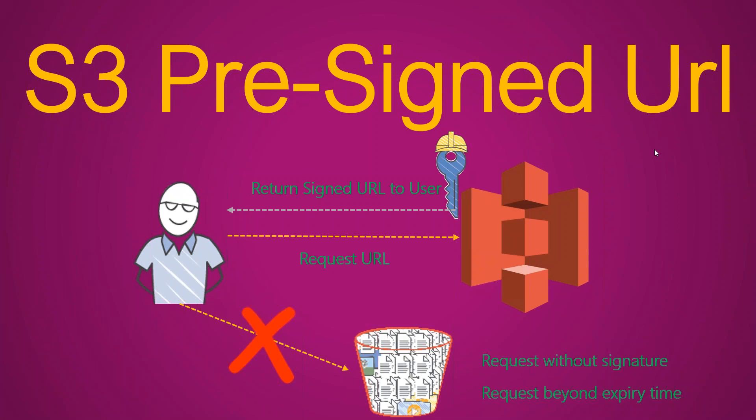When you request for a pre-signed URL, it takes your credentials and signs the URL with a secure token, and it also adds an expiry as well. For example, you can say that the URL expires in 10 seconds, and after that people cannot access that S3 object.